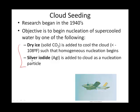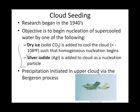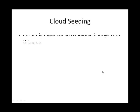Cloud condensation nuclei come in the form of silver iodide or dry ice, and you can see a plane spreading silver iodide. With those cloud condensation nuclei in place, they're trying to get the Bergeron process started — it must be some sort of cool or cold cloud. Cloud seeding has had mixed success.